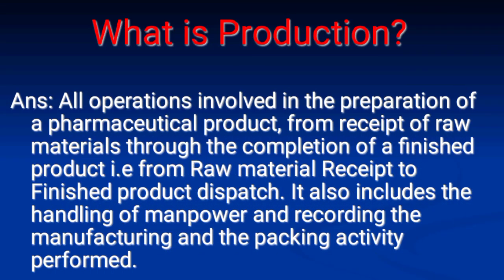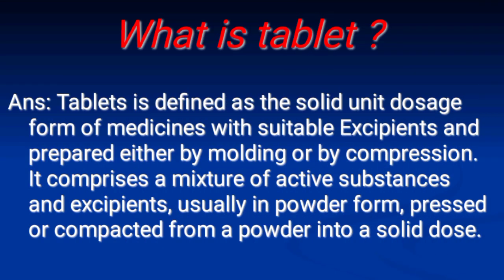Number 1: What is production? Answer: All operations involved in the preparation of a pharmaceutical product, from receipt of raw material through the completion of a finished product — that is, from raw material receipt to finished product dispatch. It also includes the handling of manpower and recording the manufacturing and packing activities performed.